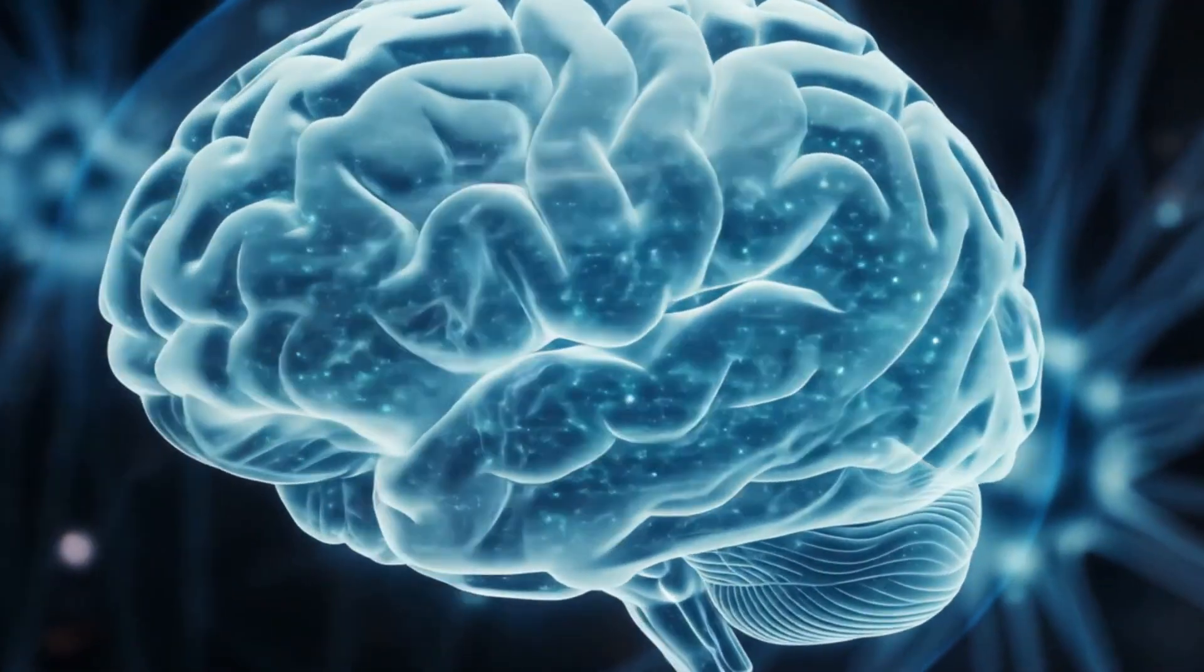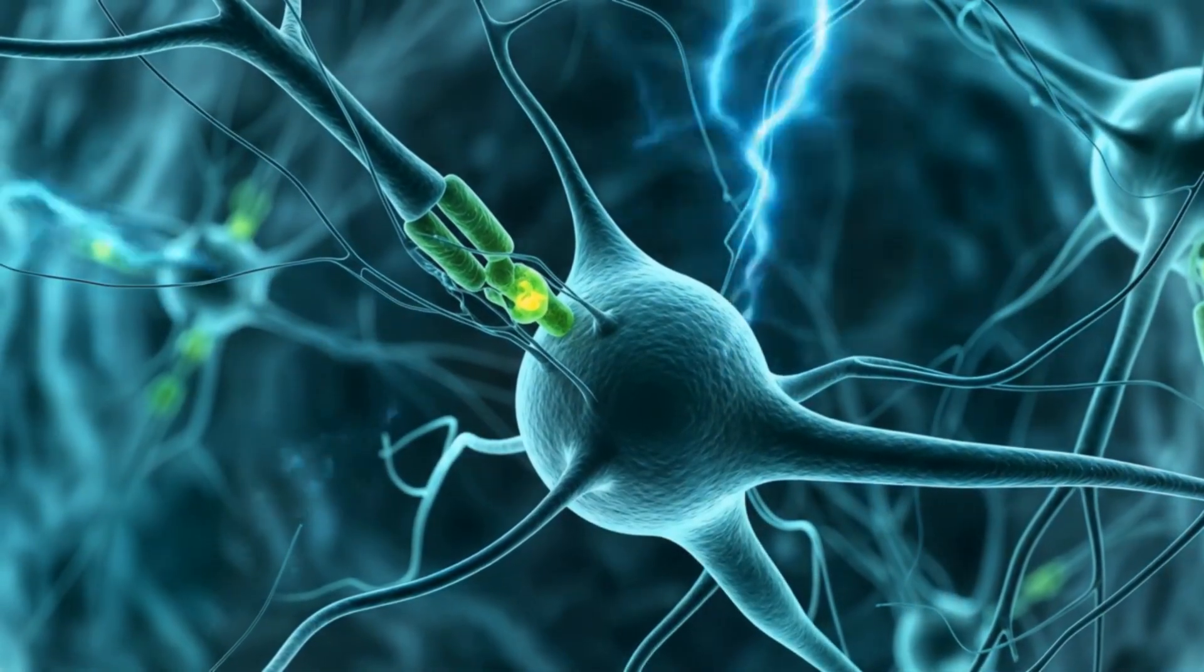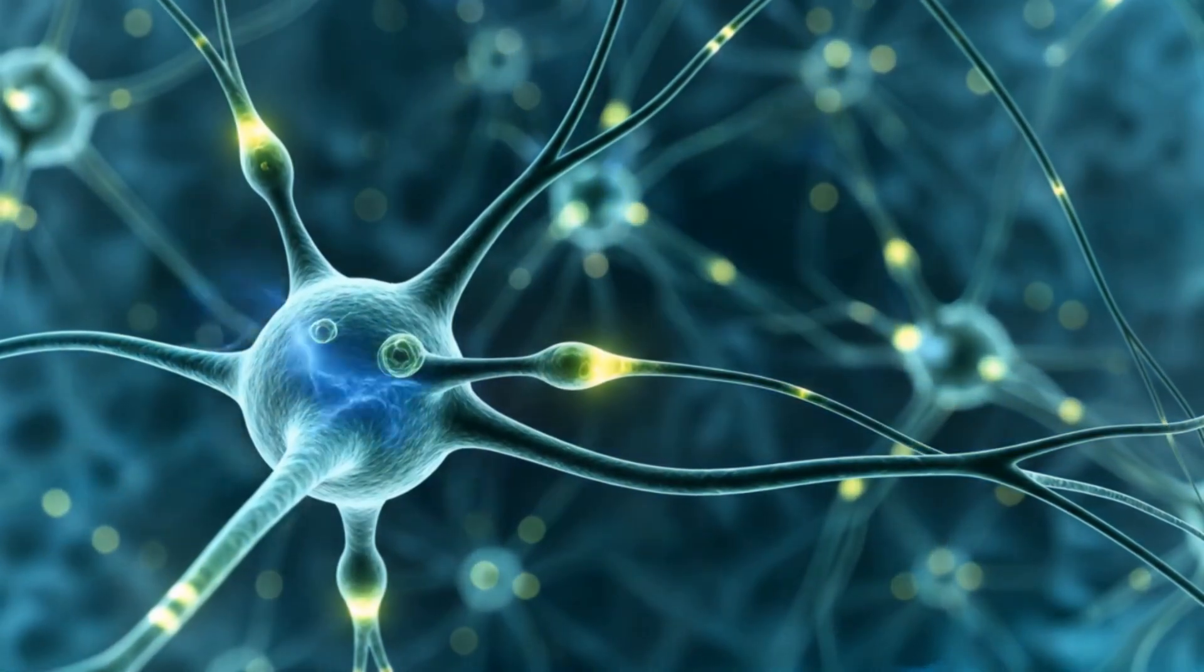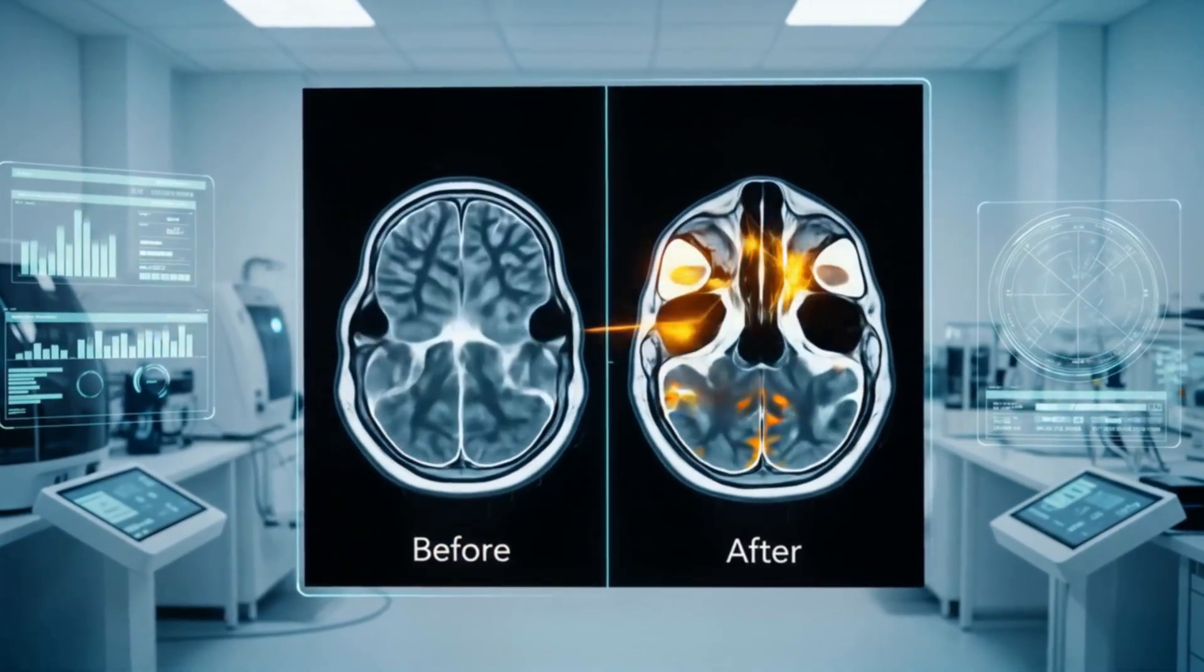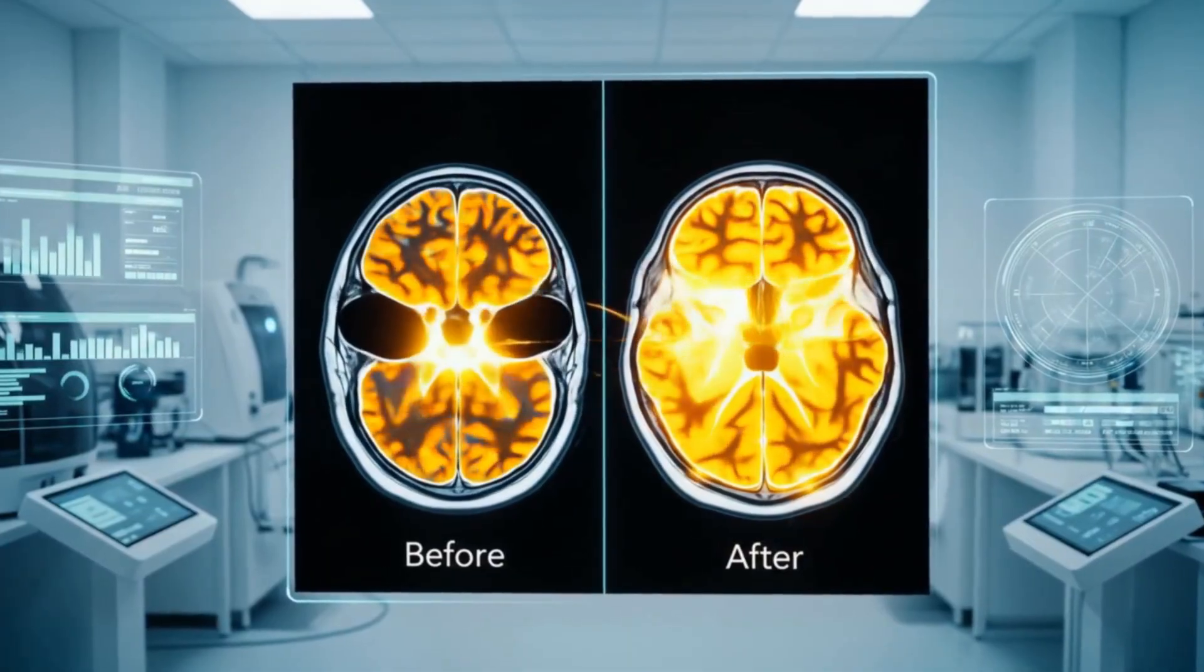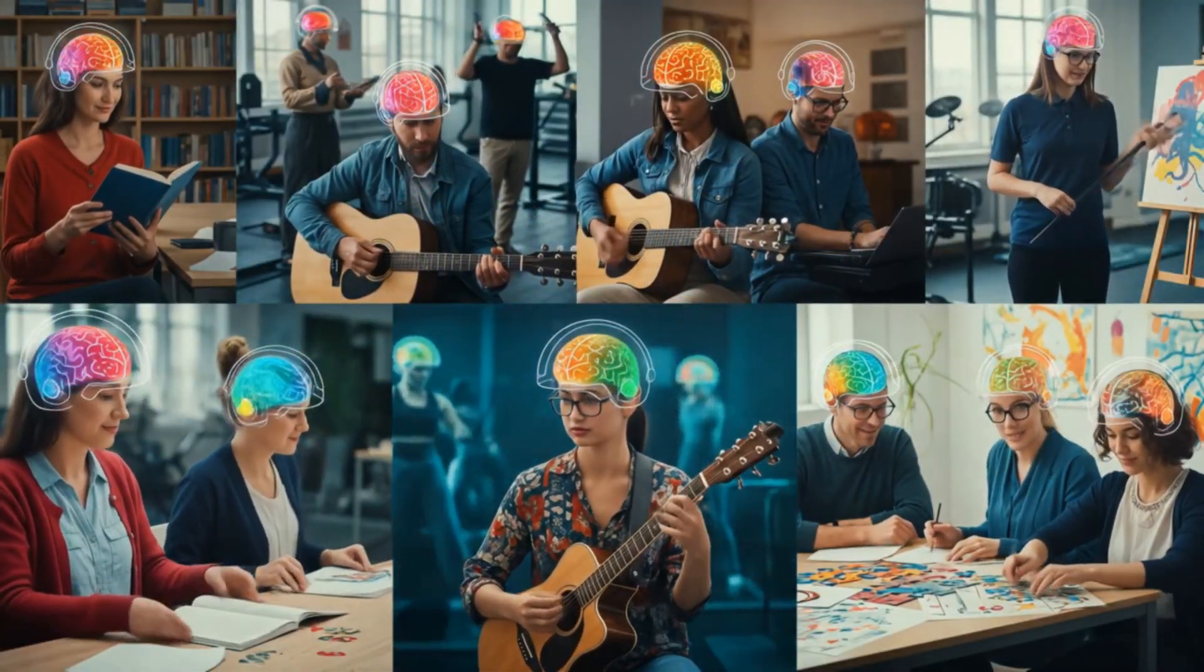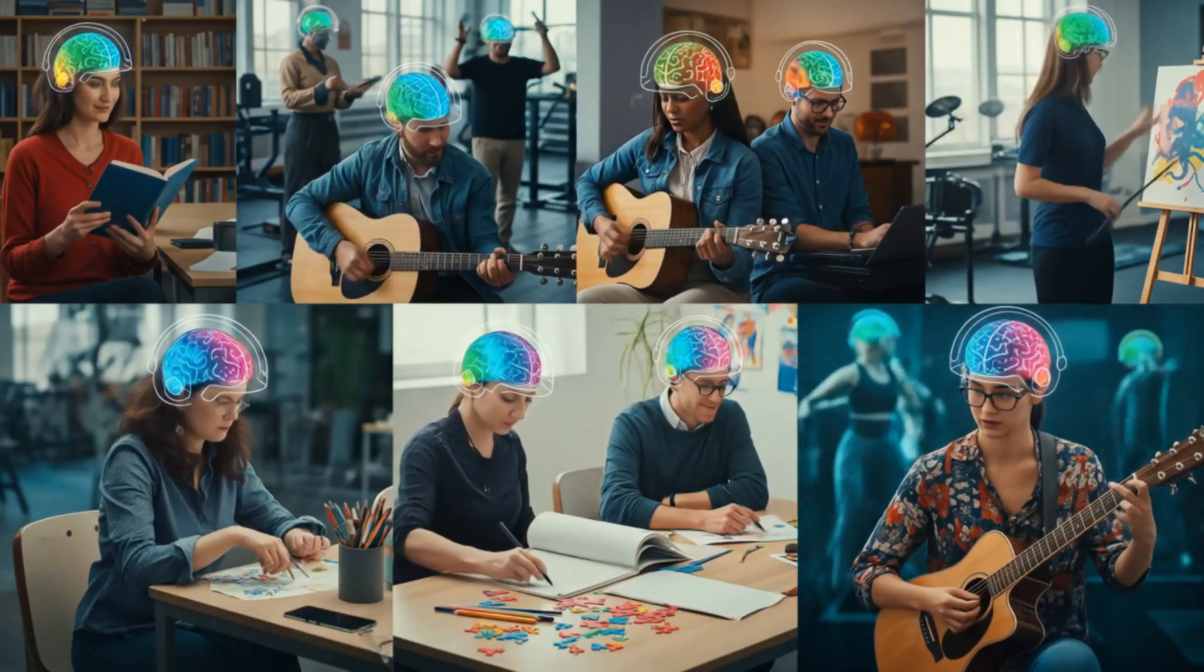Now here's something that really blows my mind. Brain plasticity. Our brains are incredibly adaptable, constantly changing in response to our experiences, education, and environment. This means that a lot of the differences we see in adult brains might be more about lived experiences than innate biology. It's a reminder that our brains are not fixed. They're dynamic, ever-changing organs that can adapt and grow throughout our lives.